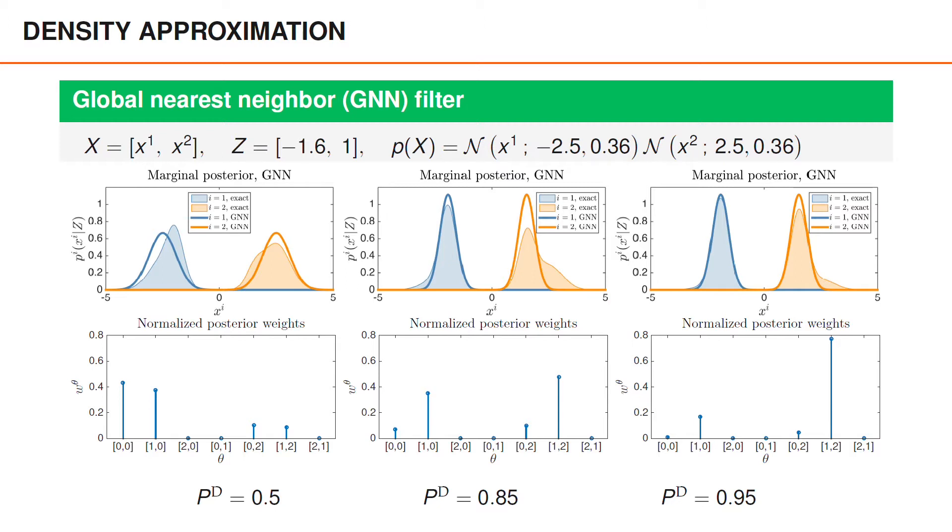Lastly, when PD is even lower, 0.5, shown on the left, we have a similar situation. The most probable hypothesis is that both objects are misdetected, and this has probability just over 0.4. So when we prune the remaining weights, the remaining hypotheses, that corresponds to almost 60% of the probability of the hypotheses. We get a clear difference between the exact posterior and the GNN approximation.